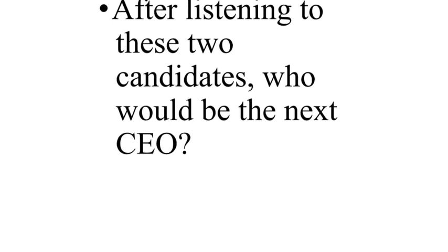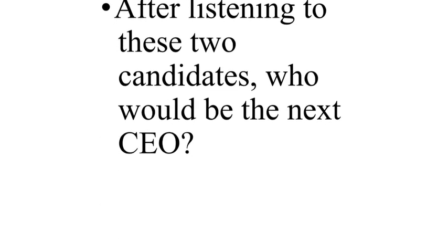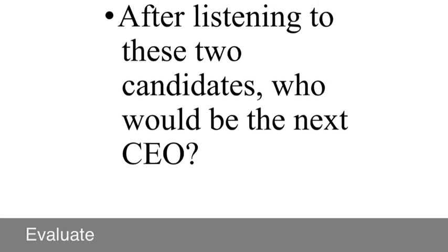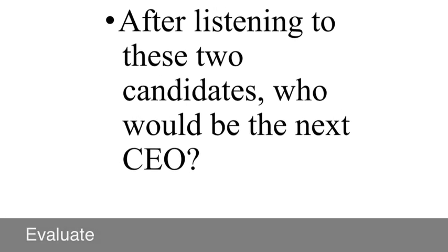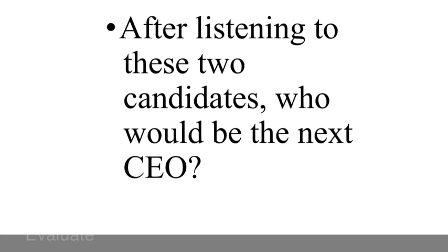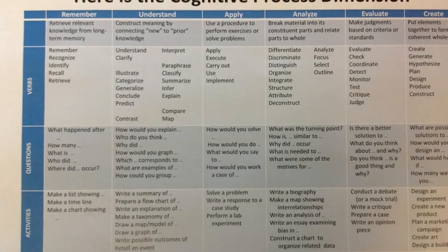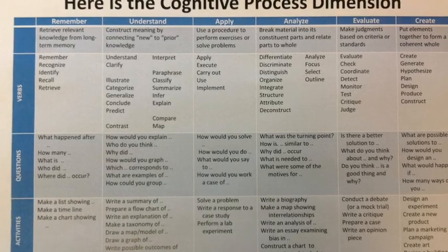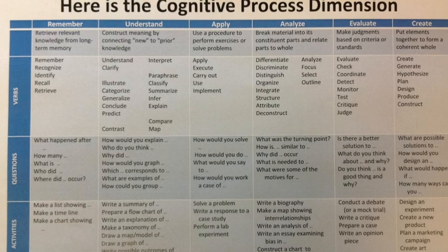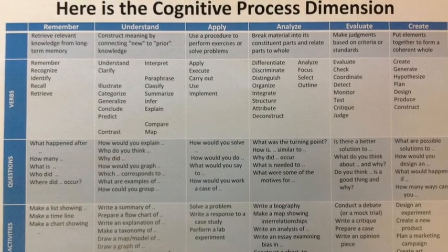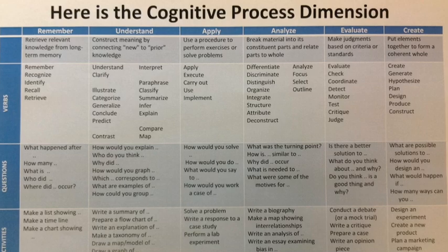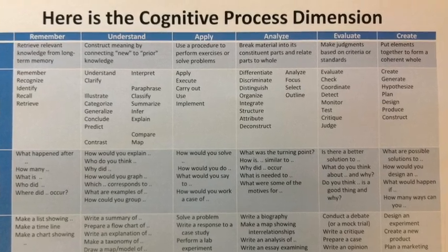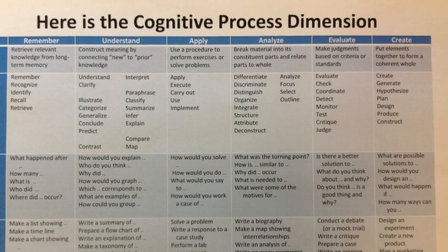'Draw a diagram of the digestive system.' This involves understanding — be able to know how the different parts of the digestive system relate to one another. 'After listening to these two candidates, who should be the next CEO?' This is an evaluation question — it's asking you to take everything you know about the subject and make a good judgment based on good criteria. If you missed some, go back and look at the chart to see where we're coming from. It may also be helpful to note that some prompts draw on multiple levels of the taxonomy. For example, in order to draw a diagram of the digestive system, in addition to understanding, you do have to remember certain basic facts about the system.